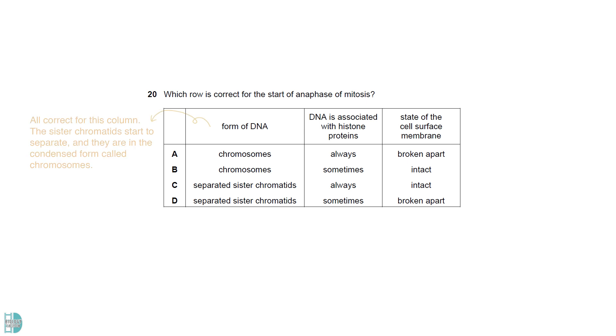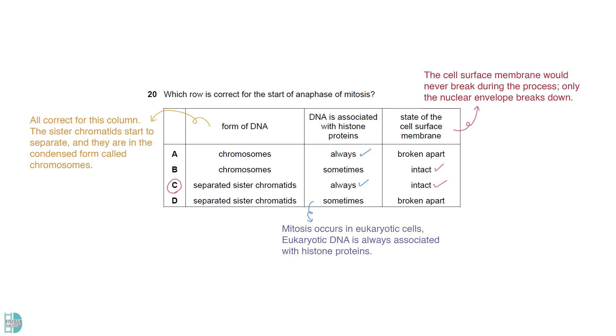All 4 options are correct about the form of DNA. The sister chromatids start to separate, and they are in the condensed form called chromosomes. Mitosis occurs in eukaryotic cells, so the DNA is always associated with histone proteins. The cell surface membrane would never break during the process. Only the nuclear envelope breaks down.